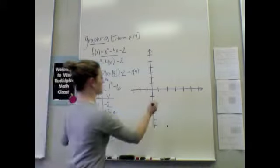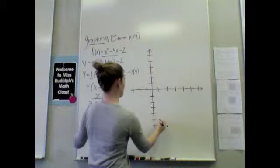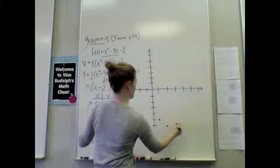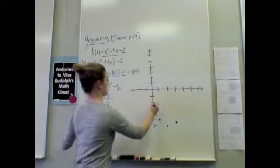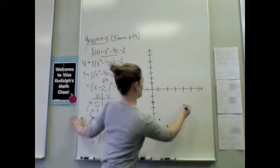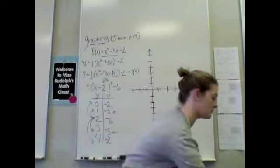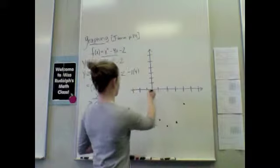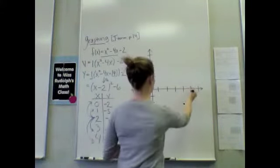We have a spot over at 1 and negative 5, and we should have another one at 3 and negative 5. We have a spot at 0, negative 2. We have a spot at 4, negative 2. Alright, the other spots that we have that I found without you guys, we have a spot at negative 1, 3. We have another spot at 5, 3.